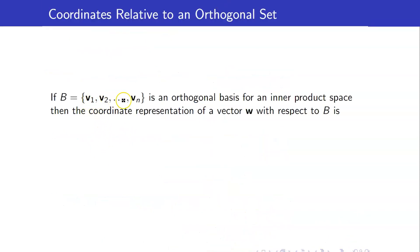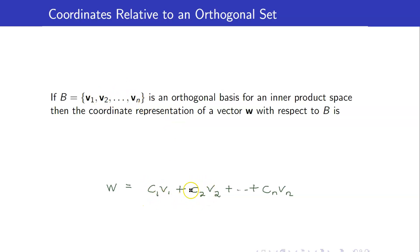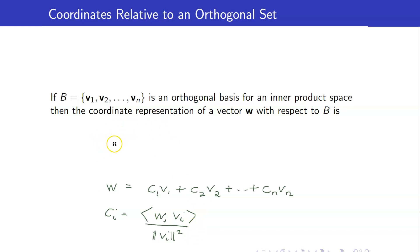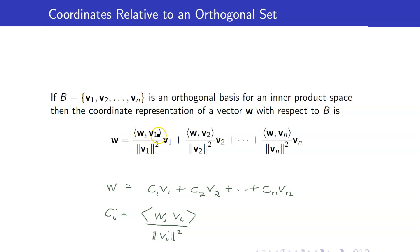Now, suppose V1, V2, ..., Vn is an orthogonal basis for a vector space V, and W is an arbitrary vector. Since B is a basis, we can write W as a linear combination of V1, V2, ..., Vn. The nice thing about having an orthogonal basis is that we can easily compute the coefficients. It turns out the coefficient Ci equals the inner product of W with Vi divided by the length of Vi squared.